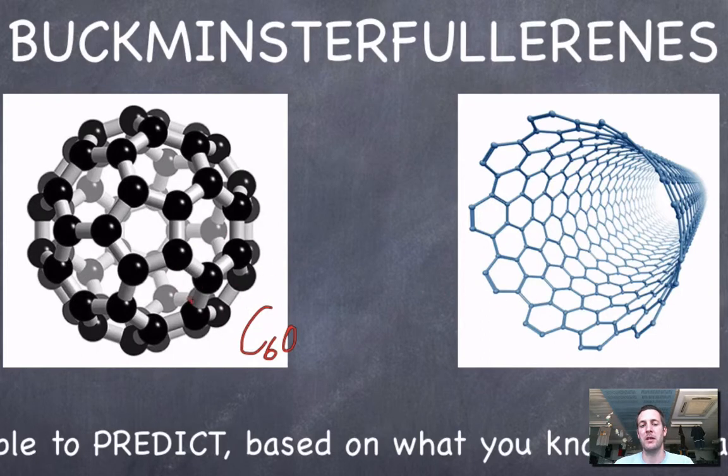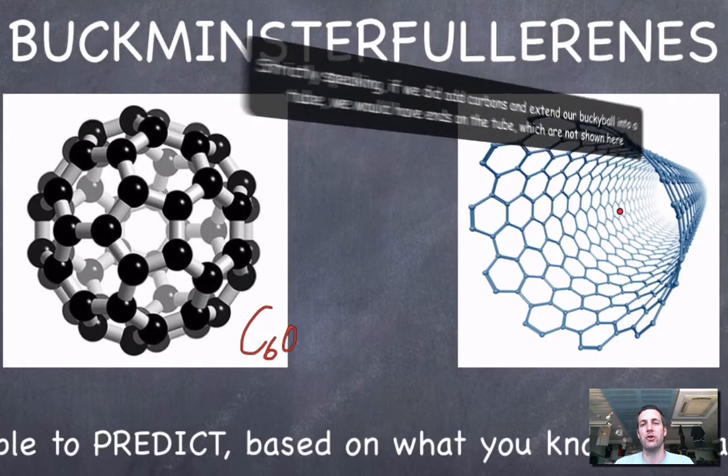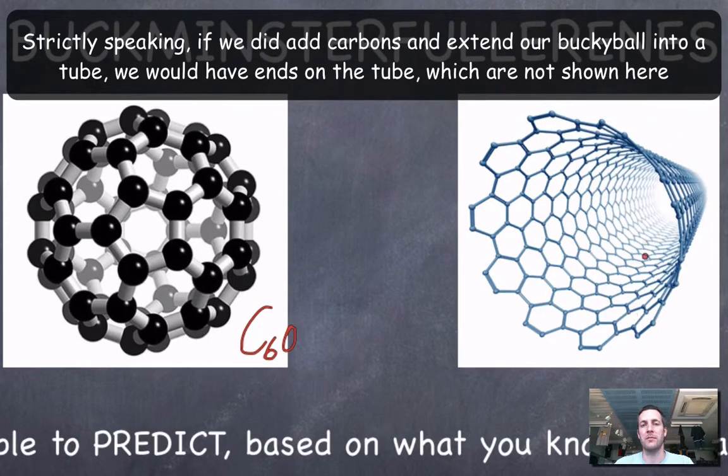However, you could construct a covalent network from something like C60. If you imagine if you cut this ball in half and put a band of carbons around its waist in a similar structure, you'd start extending this ball. If you did it long enough you'd end up with a very long tube. Again you'd have discrete molecules rather than one enormous thing.